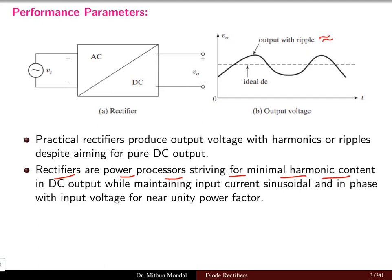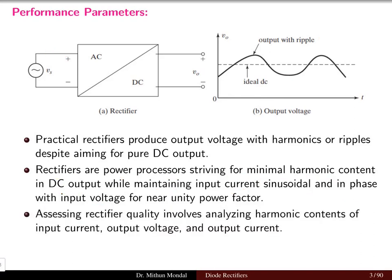Ideally the harmonic content should be equal to zero, so we have minimal harmonic content in the DC output while maintaining the input current sinusoidal. Whatever current we are drawing from the supply, it has to be sinusoidal in nature and in phase with the input voltage for near unity power factor.